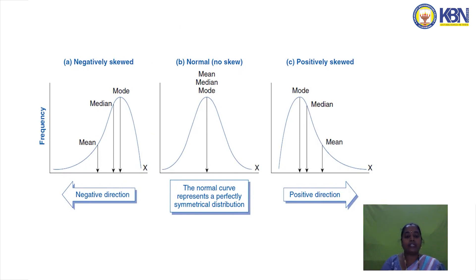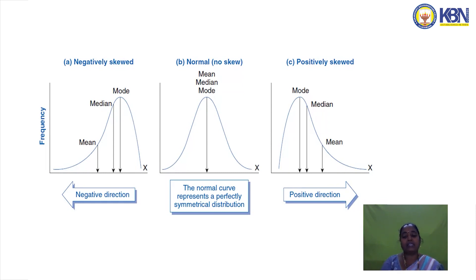In a negatively skewed distribution, the curve stretches toward the left, and mean > median > mode. In a positively skewed distribution, the curve stretches toward the right, and mode > median > mean. In a normal (symmetric) distribution, mean, median, and mode coincide at the same point, and the quartiles are equidistant from the median.